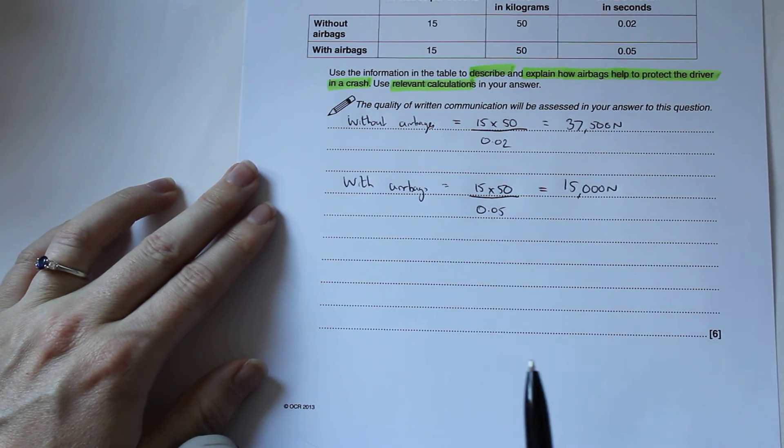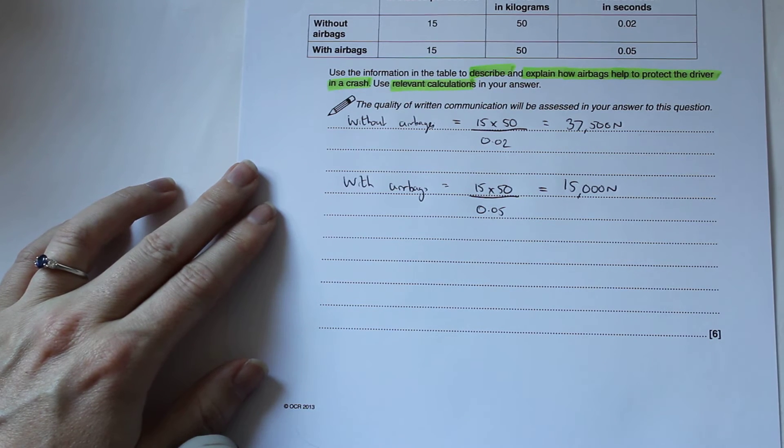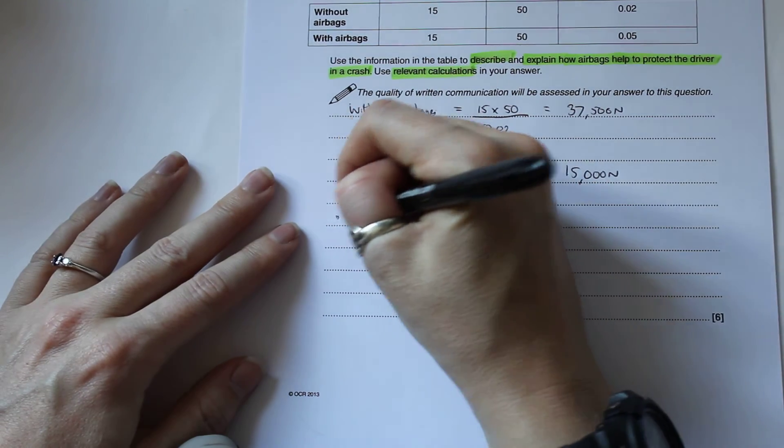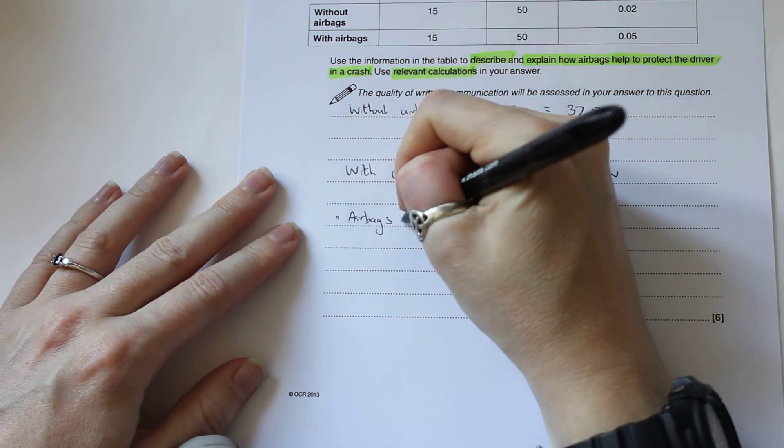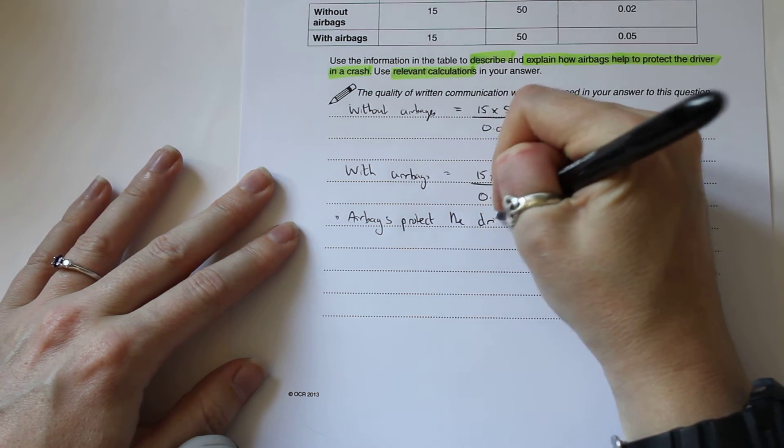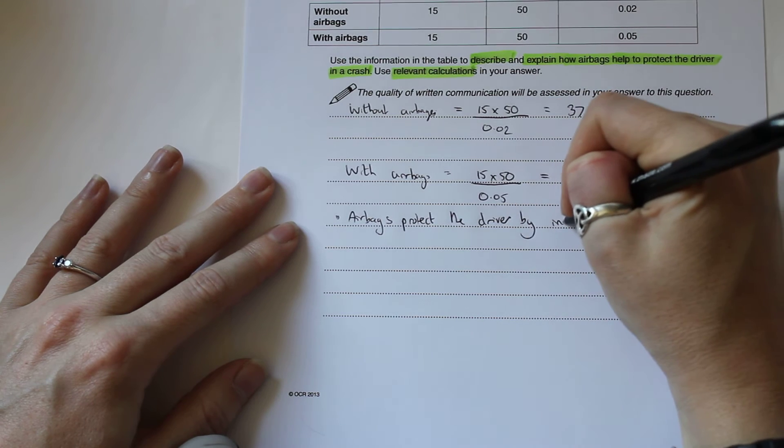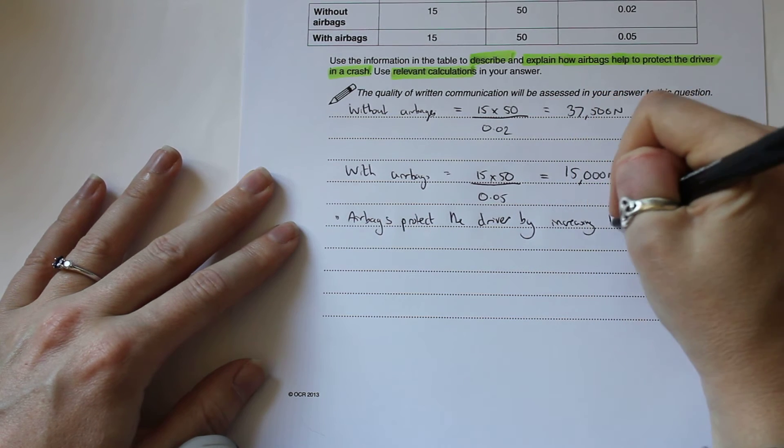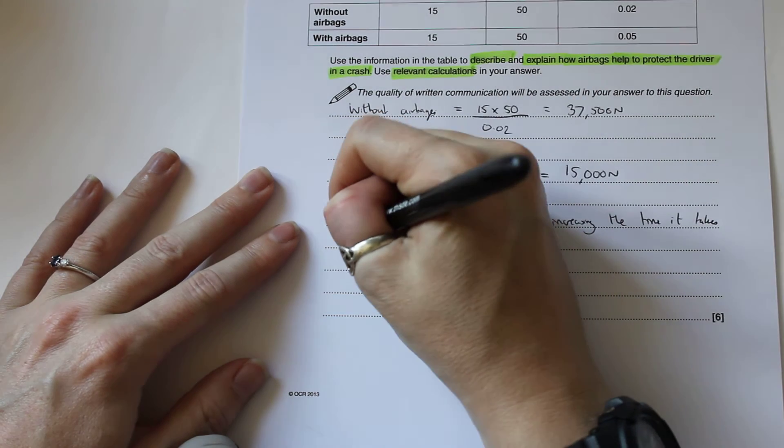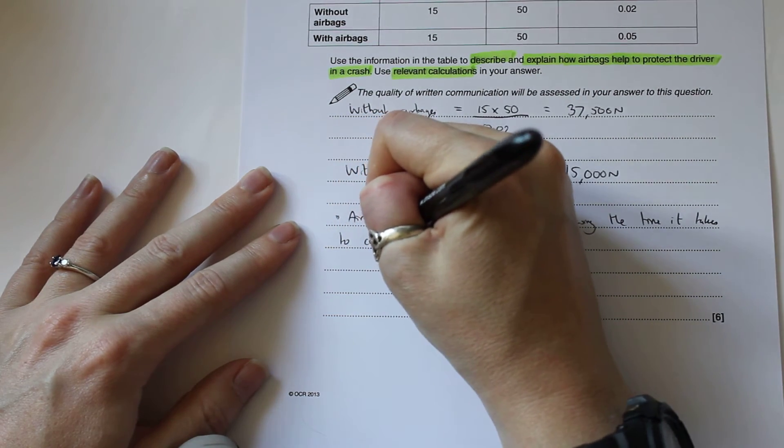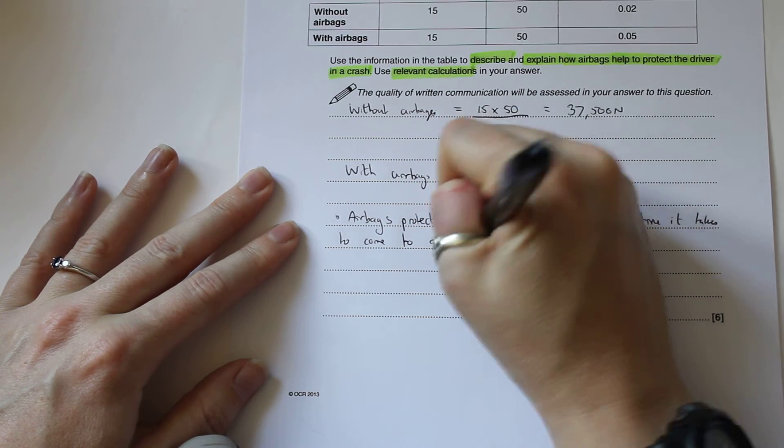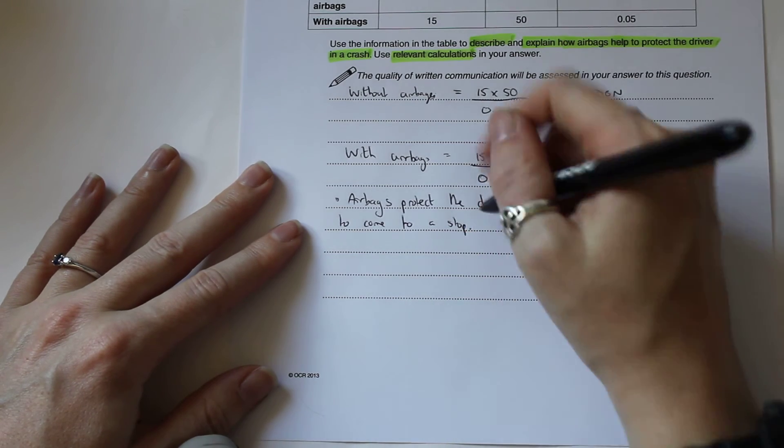Then what we need to do is describe and explain how the airbags help protect the driver. So we talk about what these calculations show. Airbags protect the driver by increasing the time it takes to come to a stop.